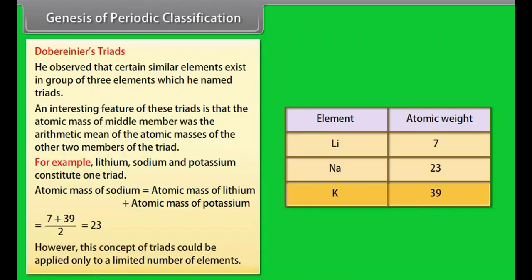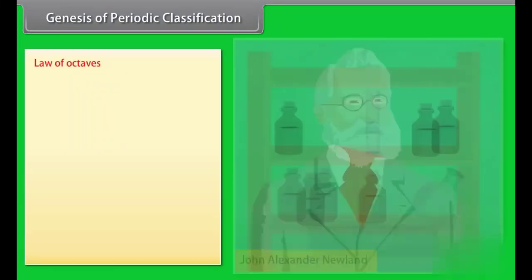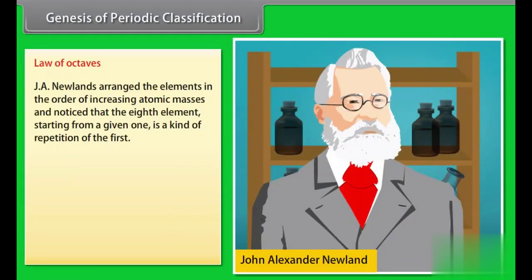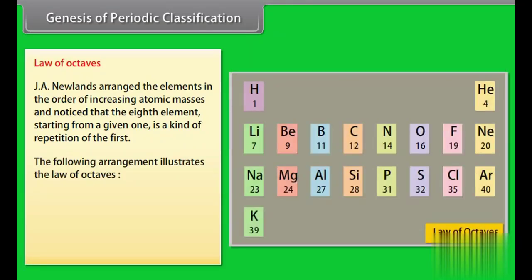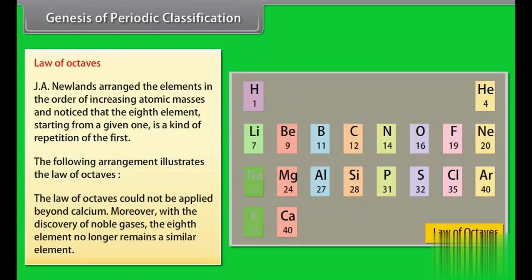However, this concept of triads could be applied only to a limited number of elements. Law of Octaves: J.A. Newlands arranged the elements in the order of increasing atomic masses and noticed that the eighth element starting from a given one is a kind of repetition of the first. The Law of Octaves could not be applied beyond calcium. Moreover, with the discovery of noble gases, the eighth element no longer remains a similar element.